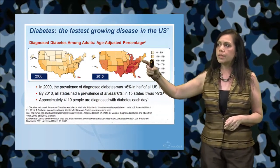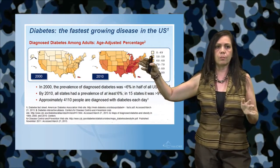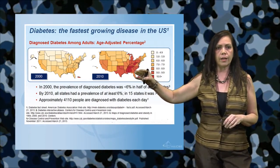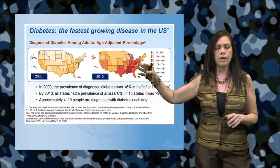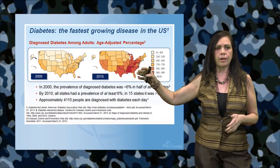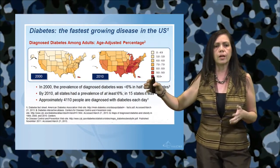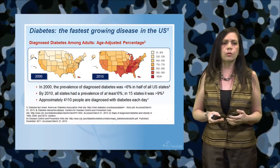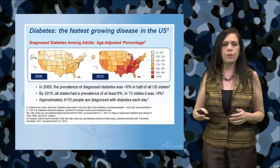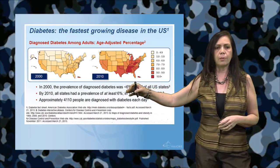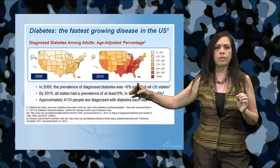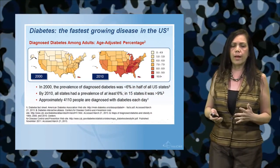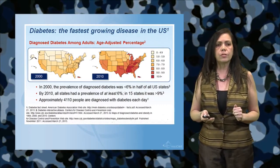We look at diabetes and we see the diagnosis among adults, especially the age-adjusted percentage comparison between 2000 and 2010. You can see on the right here where we have that scale of increase in the prevalence and incidence of diabetes throughout the country, and you can see that it's more concentrated on the East Coast rather than the West Coast. This doesn't even take into account the actual pre-diabetes prevalence that we're seeing. If you look at the approximate number of people diagnosed with diabetes, it's 4,110 people a day diagnosed with type 2 diabetes — pretty incredible, and that's why we're here talking about the diabetic foot and the ulcers and manifestations.